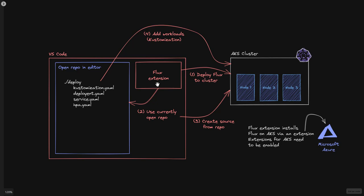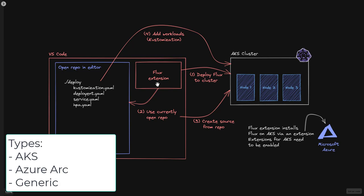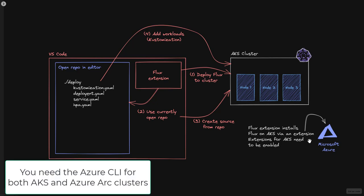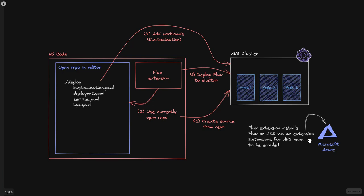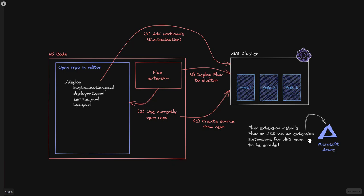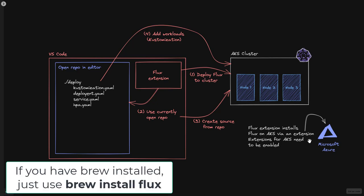The extension will detect what kind of cluster it is. They're working together with Microsoft, so if it's an AKS cluster or even an Azure Arc-enabled cluster, the installation of Flux will be done via an AKS extension using the Azure CLI. You need to make sure the Azure CLI is installed on your workstation and that you're authenticated to the subscription where your AKS cluster is running. Using an AKS extension also ensures that the Helm charts for deploying Flux are automatically upgraded on new patch releases. If you're not running AKS, Flux just uses its own native installation — you'll need the Flux CLI installed on your local machine.